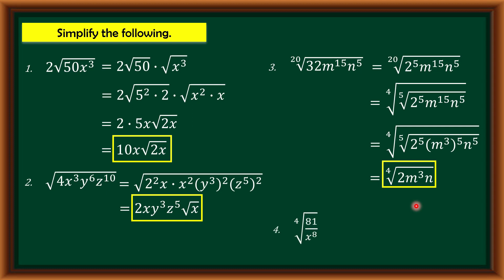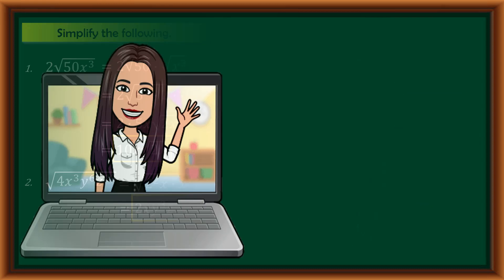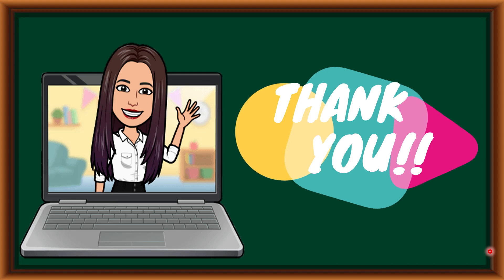Let us have our last example: the fourth root of 81 over x raised to 8. We write 81 as 3 raised to 4, and x raised to 8 as x squared raised to 4, since x squared raised to 4 equals x raised to 8. Applying the first law, where the index and exponent are equal, our answer is 3 over x squared. And that is how we simplify a radical expression. That's it for our video. Thank you for watching. See you again in my next video. Bye!